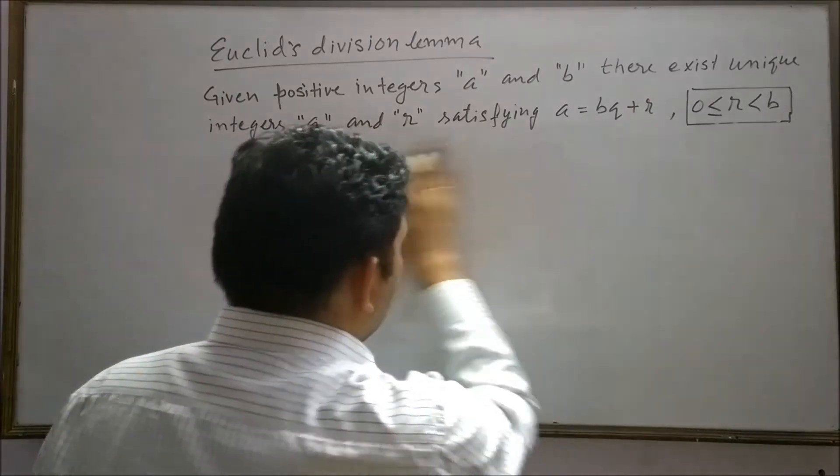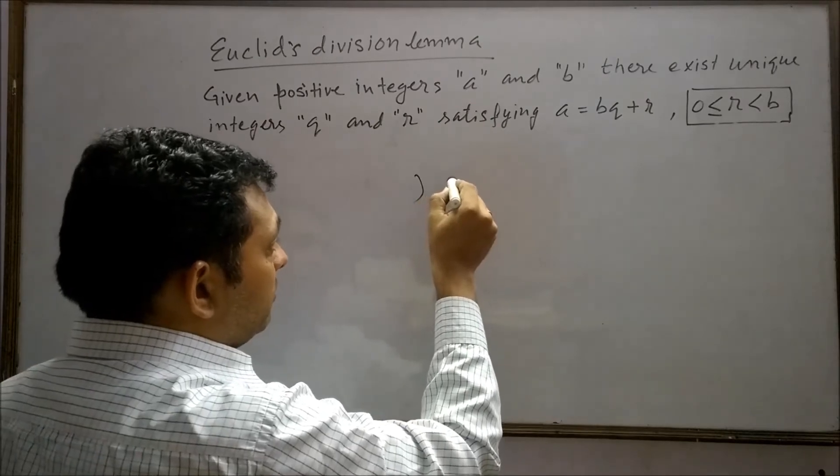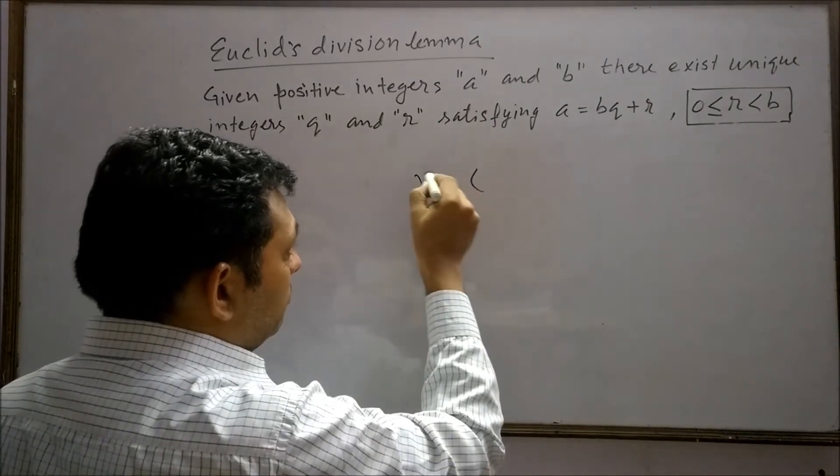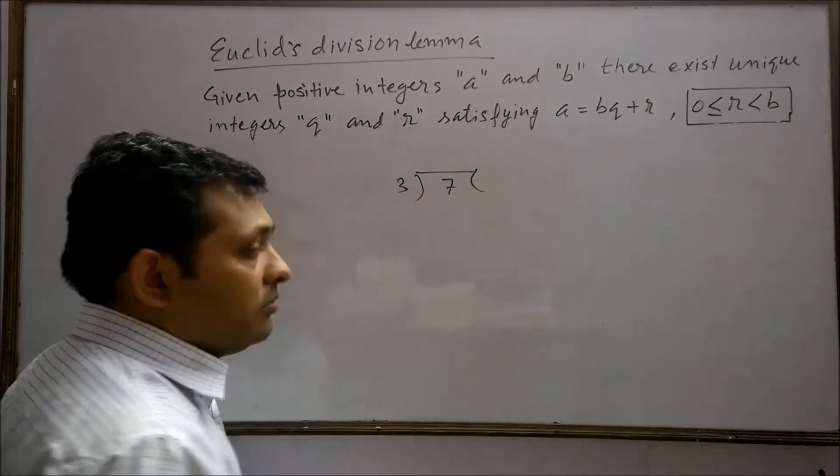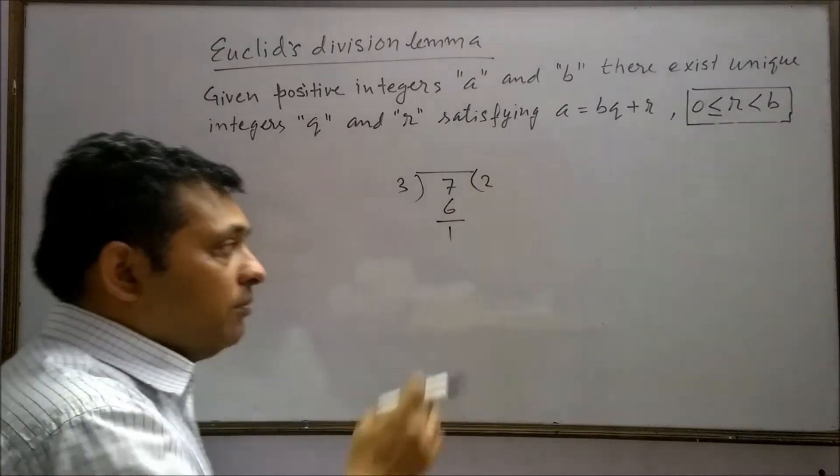For example, if we have a positive integer 7 divided by 3, the remainder is 1.